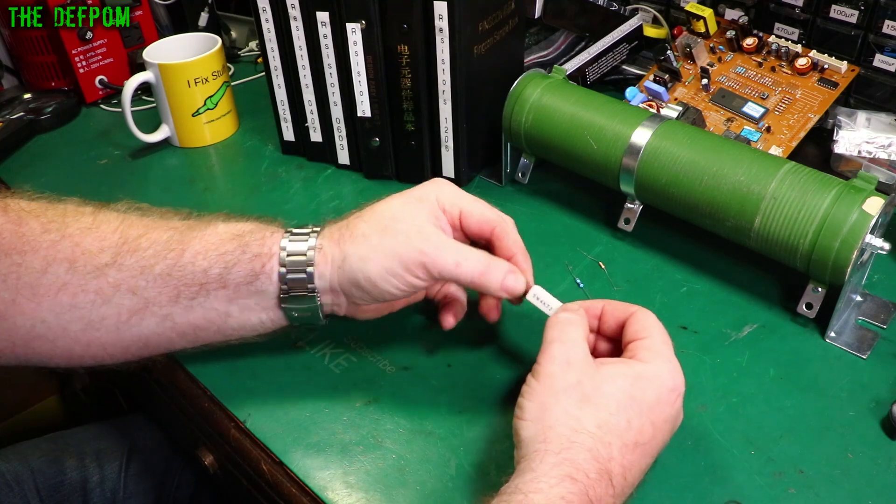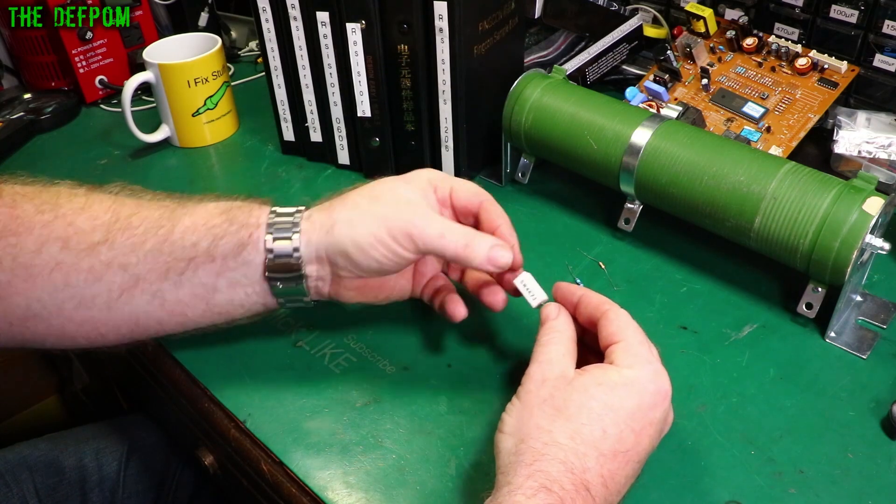We've also got these larger ceramic type which are basically a wire-wound resistor inside a ceramic package to help heat dissipation.